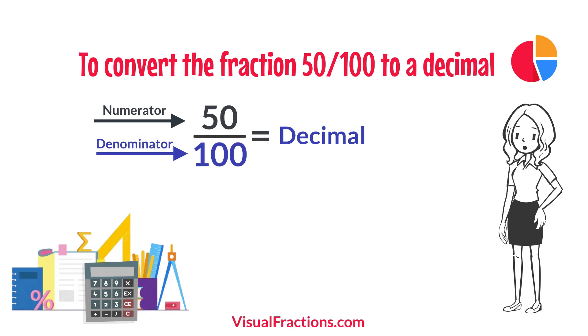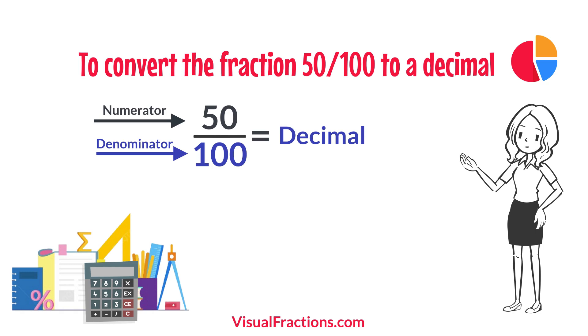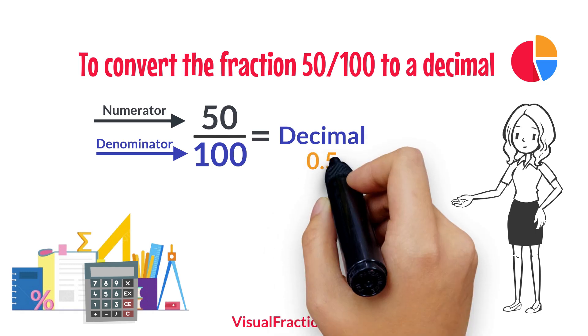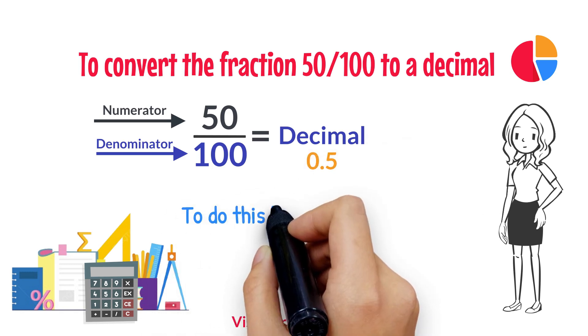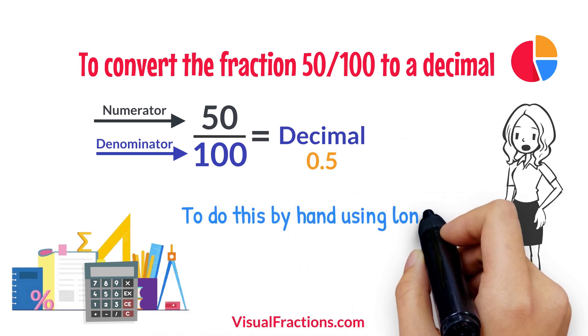We simply divide 50 by 100. The answer we get is 0.5. To do this by hand using long division,